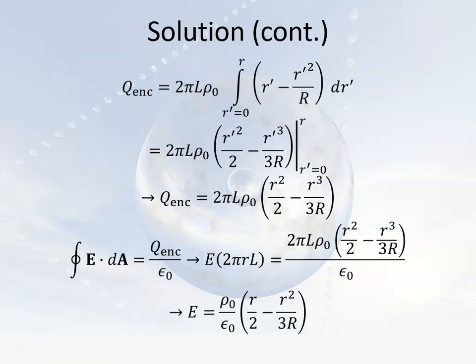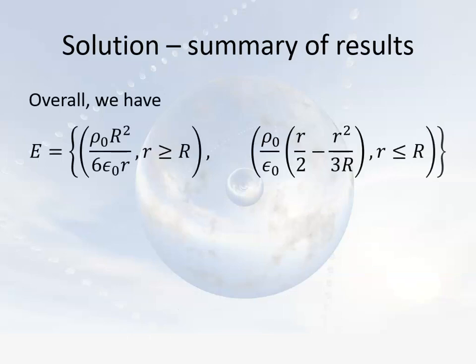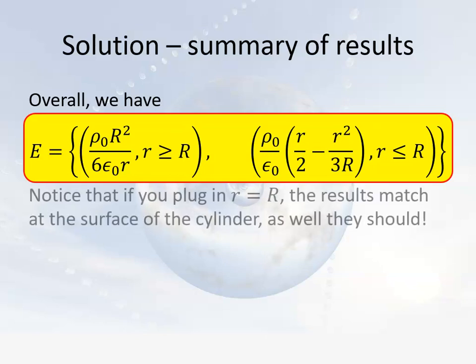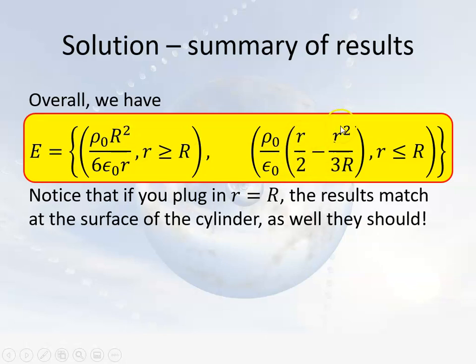Let's summarize these results. The electric field is rho-naught·R² / (6·epsilon-naught·r) for little r ≥ big R, and rho-naught / epsilon-naught times (r/2 − r²/(3R)) for little r ≤ big R. Since it's a continuous charge distribution, the results must match at the surface. Plugging little r = big R into the inner expression: the parenthesis becomes R/2 − R/3 = R/6, giving rho-naught·R / (6·epsilon-naught), which matches the outer expression. It works out.